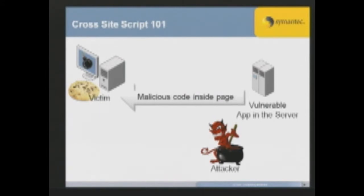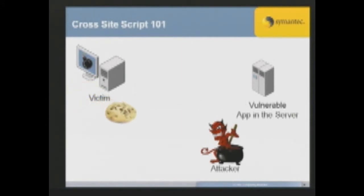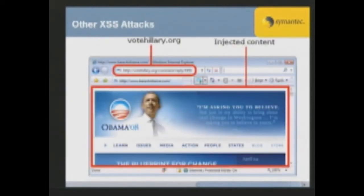The client executes the script and in this example, what it says is: send your cookie to the attacker. The cookie goes to the attacker, and once you have somebody's cookie you can impersonate that person - that's one of the ways you can carry out a cross-site scripting attack. A lot of people think you can only steal cookies, but there's a lot more you can do. Consider what happened during the presidential election campaign.